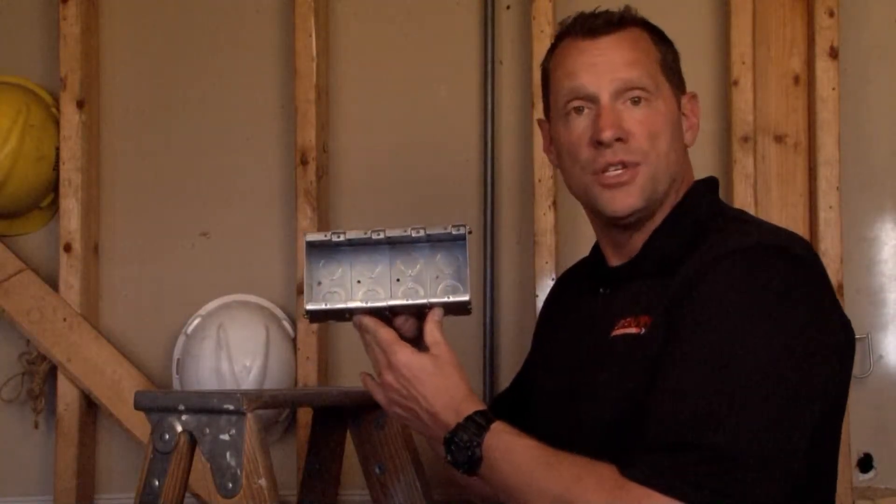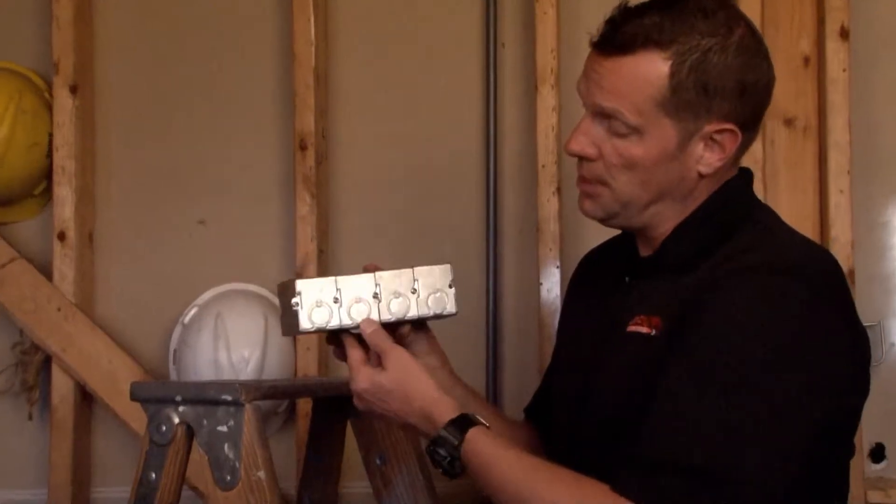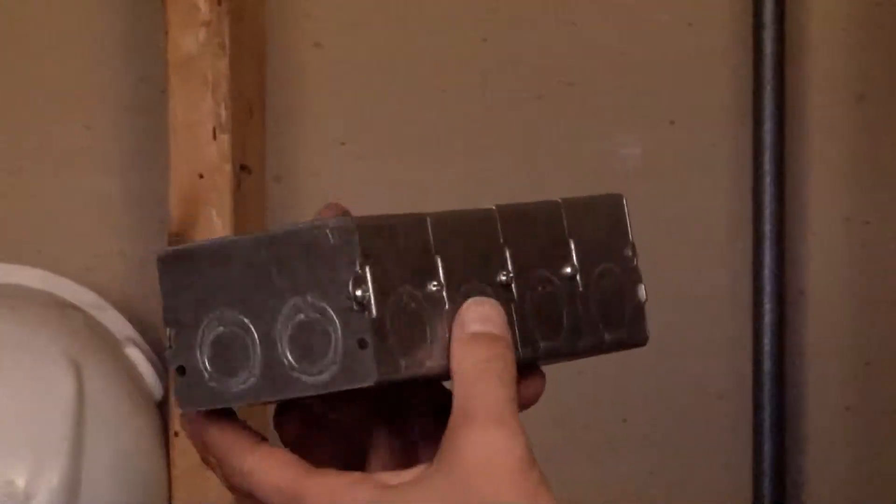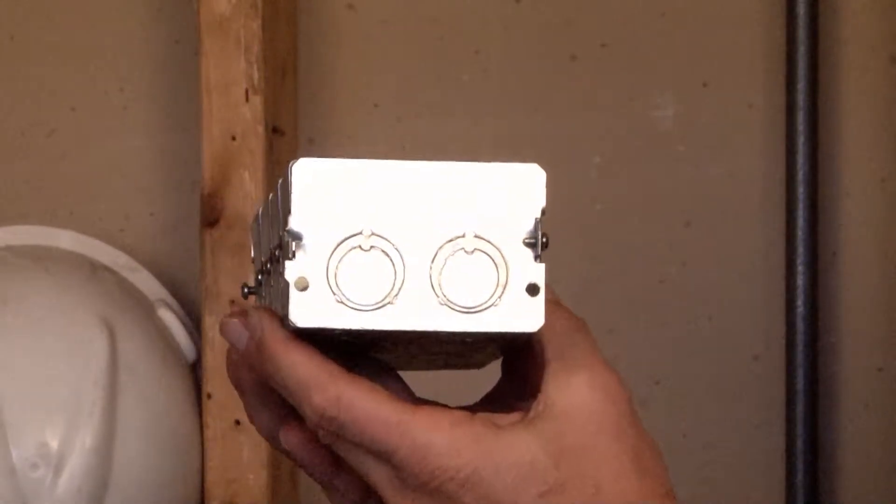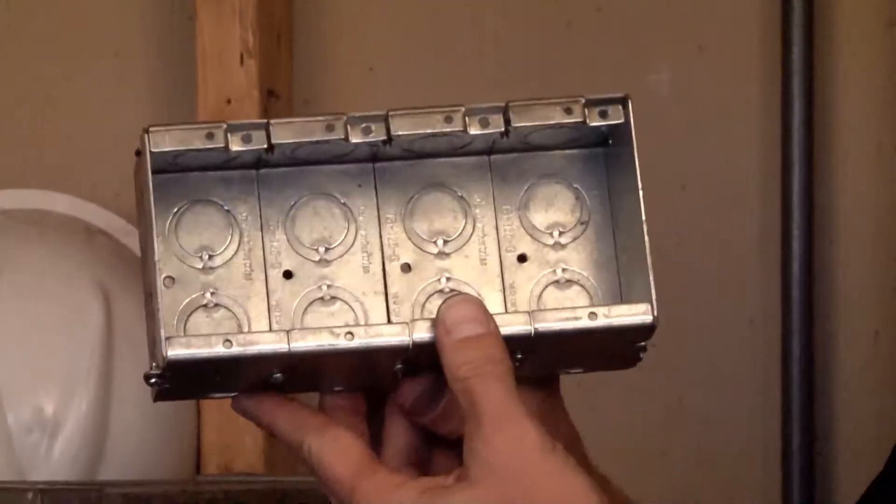Part number TB425G is a four-gang masonry box that is two and a half inches deep and has half-inch and three-quarter inch concentric conduit knockouts on all four sides and in the bottom.